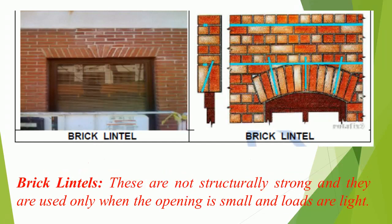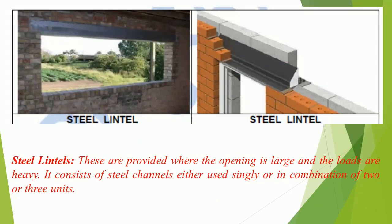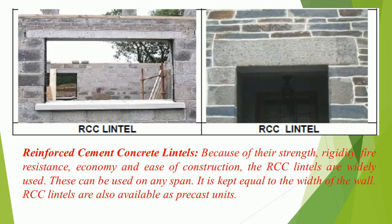Brick lintels are not structurally strong and are used only when the opening is small and loads are light. Steel lintels are provided where the opening is large and loads are heavy; they consist of steel channels used singly or in combination of two or three units. Reinforced cement concrete (RCC) lintels are widely used because of their strength, rigidity, fire resistance, economy, and ease of construction. They can be used on any span, the width is kept equal to the width of the wall, and they are also available as precast units.